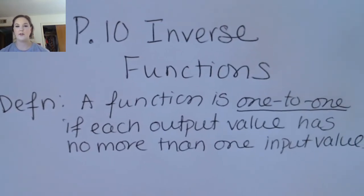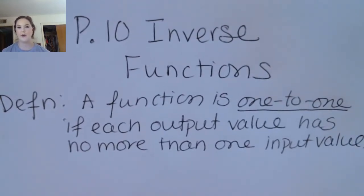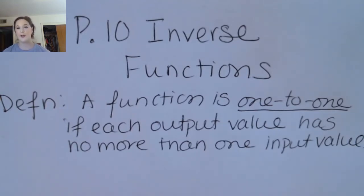So we say that a function is one-to-one if each output value has no more than one corresponding input value. You don't want an output to have two corresponding inputs or three corresponding inputs or whatever.